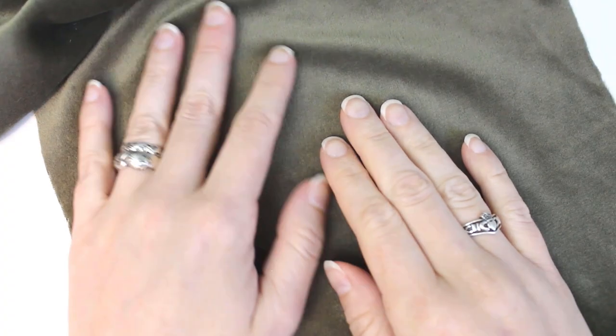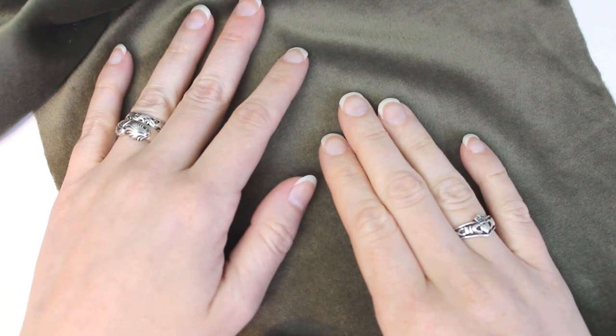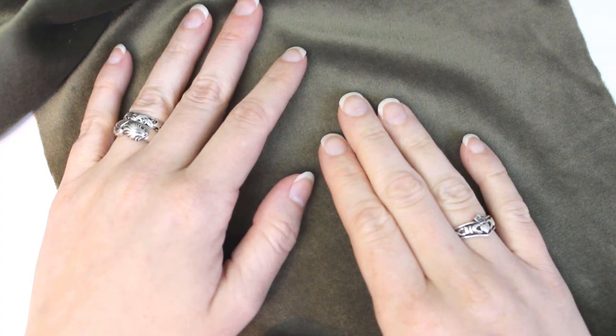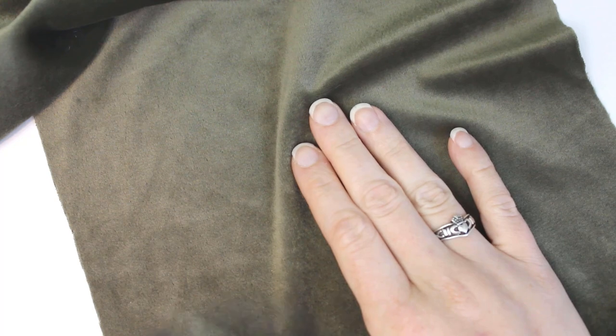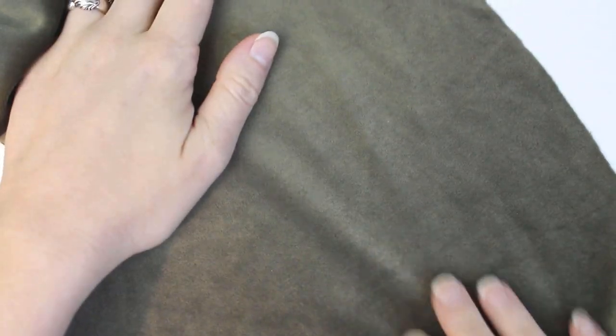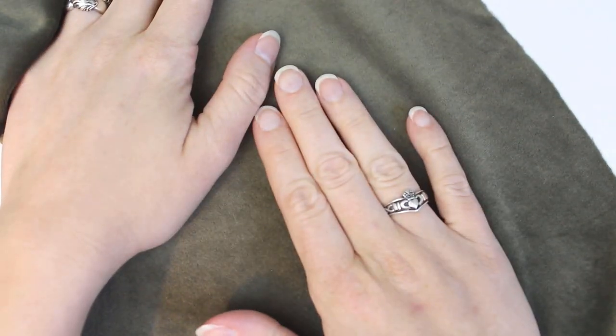One last thing we'll look at before we get cutting is the fabric nap. Some fabrics, like flannel, fleece, velvet, or this piece of scrap velour have a nap, which is the direction the fuzzy surface, or pile, of the material is designed to lay.